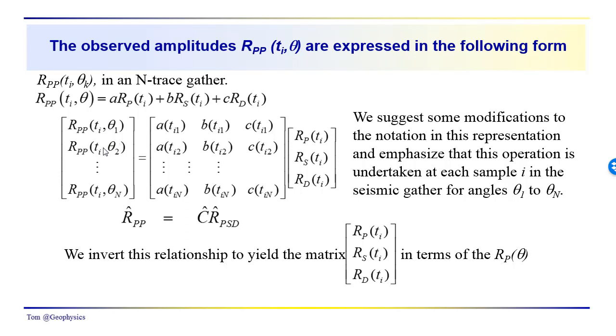We can express this in a matrix form where we have the reflected P wave at a particular time t sub i, which is constant throughout the terms in this vector here, and then we have theta going from theta one to theta n over the range of offsets in the gather.